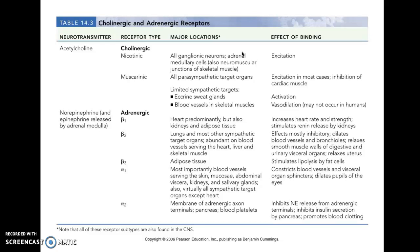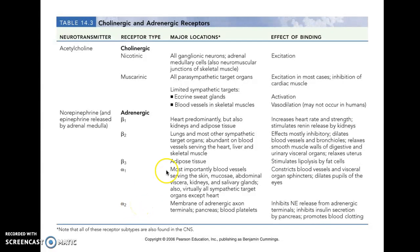Here is a table that summarizes the neurotransmitters — acetylcholine and norepinephrine/epinephrine — and the receptor types. Cholinergic receptors include nicotinic and muscarinic, and adrenergic receptors are broken down by subtype: beta-1, beta-2, beta-3, alpha-1, and alpha-2. This table is handy because it reminds you of the locations of the receptors and gives a quick overview of what happens at those receptors when an agonist or neurotransmitter binds.